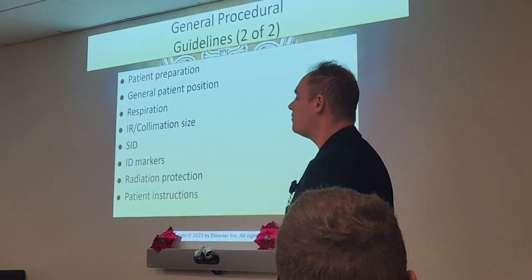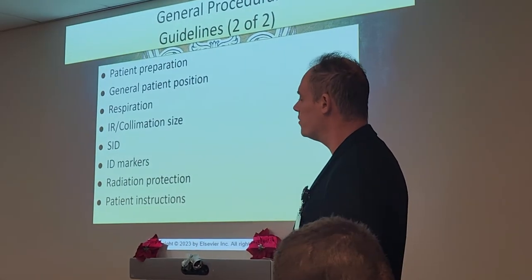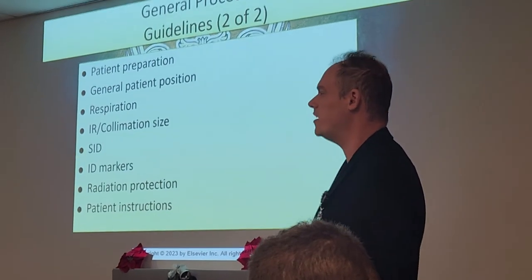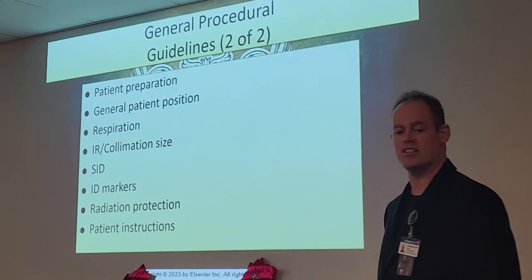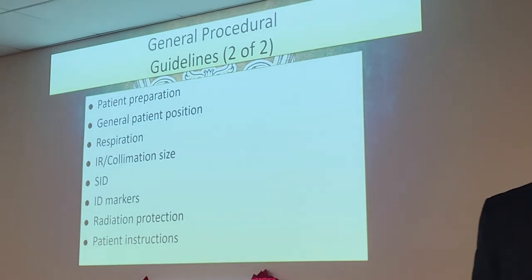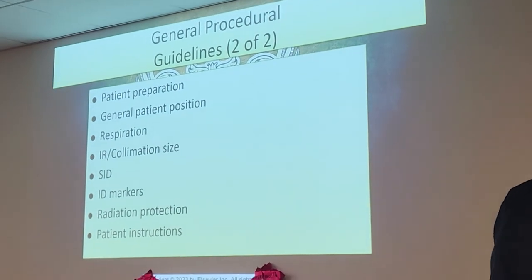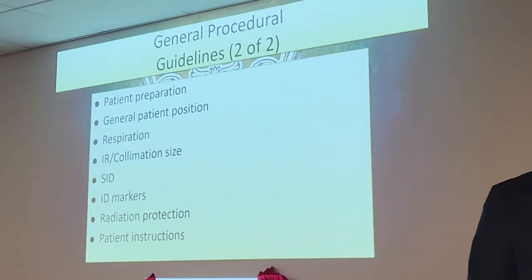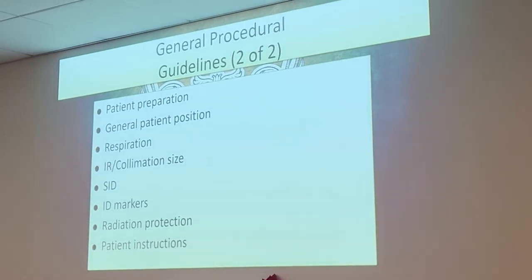Our cassette size is going to vary between pelvis and femur. SID will be universally 40 inches this chapter, which is really nice.